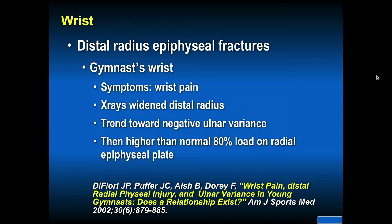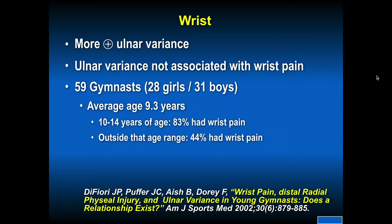Distal radial epiphyseal fractures — gymnast wrist — present with wrist pain. X-rays initially will show a widened distal radial epiphyseal plate and a trend toward negative ulnar variants. They have a higher than normal 80% load on the radial epiphyseal plate. More ulnar-positive variants are not associated with wrist pain. In this study of 59 gymnasts with average age 9.3 years, 83% had wrist pain inside that age group and 44% had wrist pain outside of it.